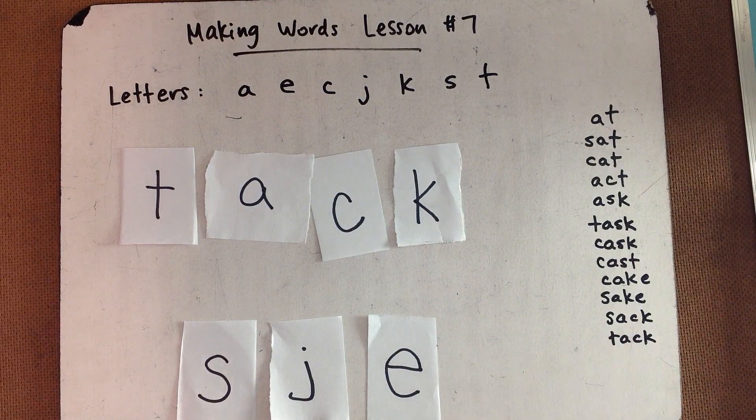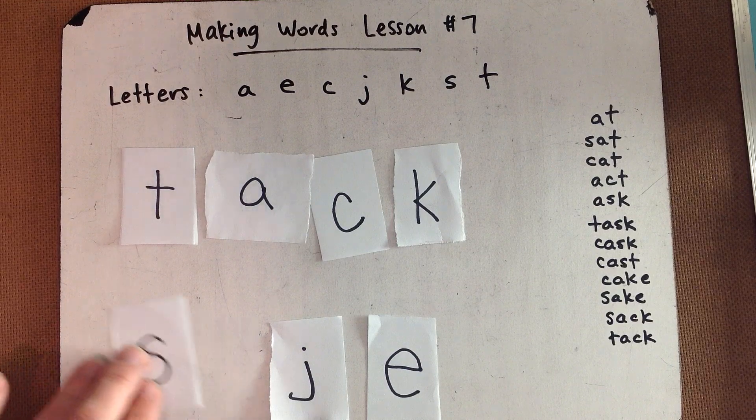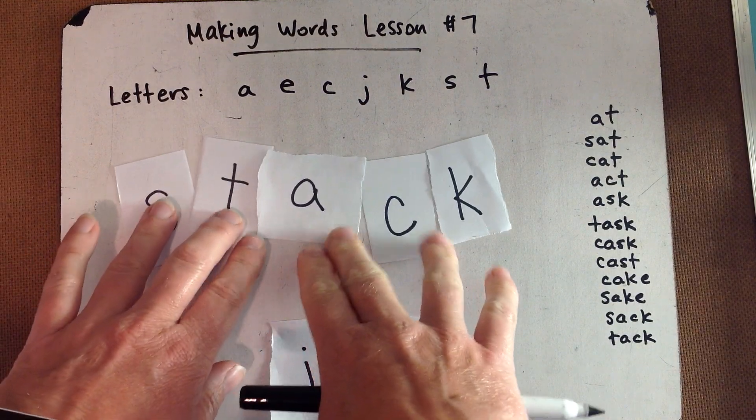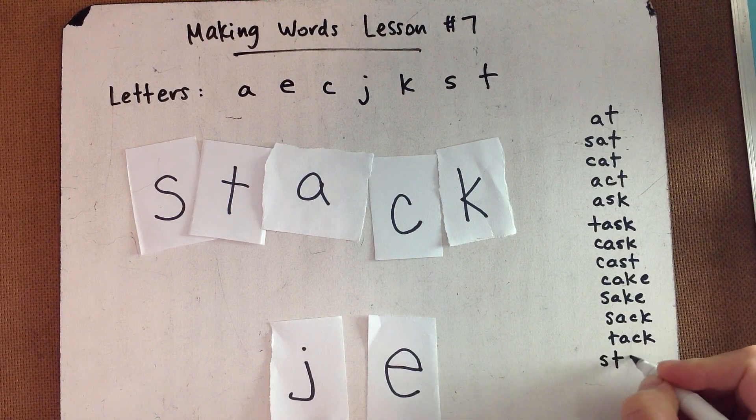What about if you know how to spell tack, spell stack. Right? You don't even have to worry about the end because you've already got tack. You just add an S in front. That's an S-T blend at the front. So we have stack.